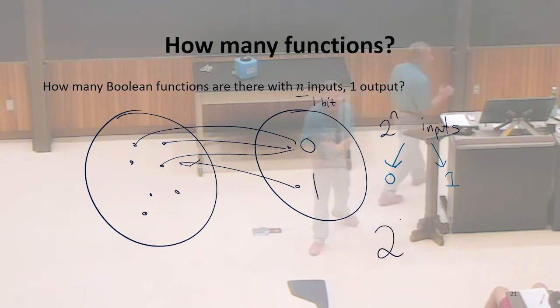So how many different functions are there? Yeah, two to the two to the N. Any different way of mapping each of those inputs to a different bit as the output is a different function. So two to the two to the N functions, that's a lot of functions.